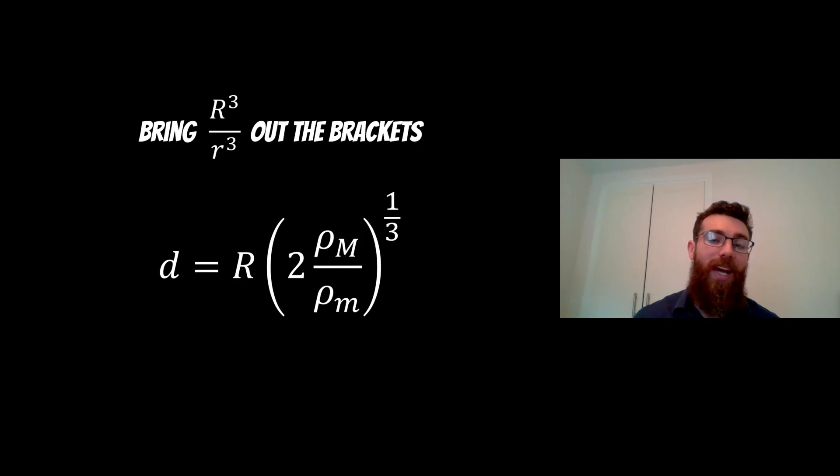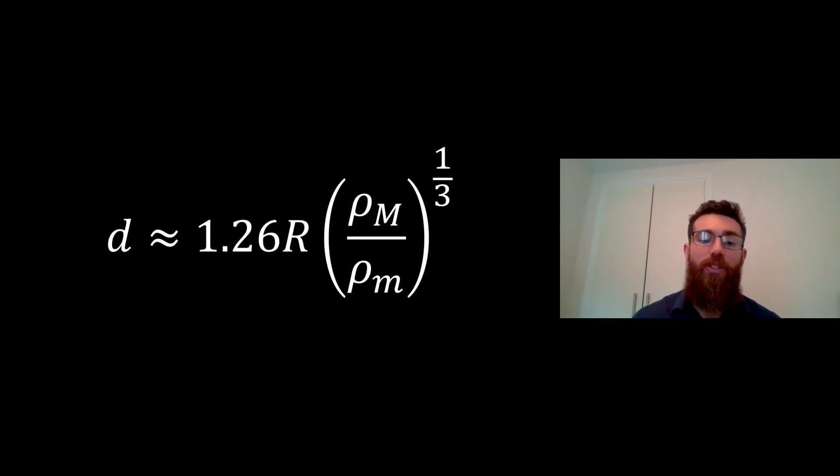One final thing we can actually do there is we can just approximate it. We'll bring in the two out and we're left with this approximation here: d ≈ 1.26R(ρ_M/ρ_m)^(1/3). This is our final Roche limit for a rigid satellite. You can have a go at calculating certain limits for the planets in our solar system. You can have a go with Saturn and see where you get this limit compared to the actual ring systems that we know where they are. See how close you can actually get.